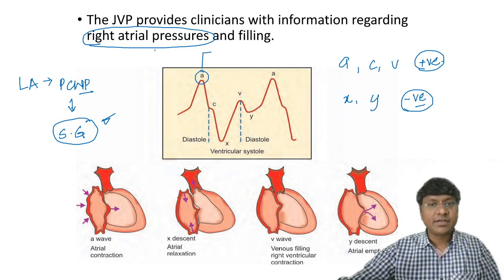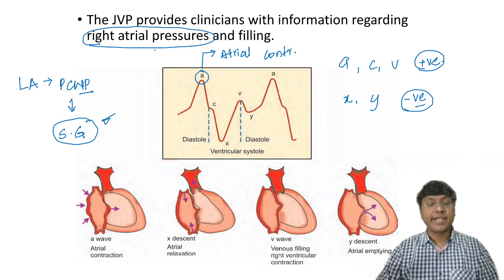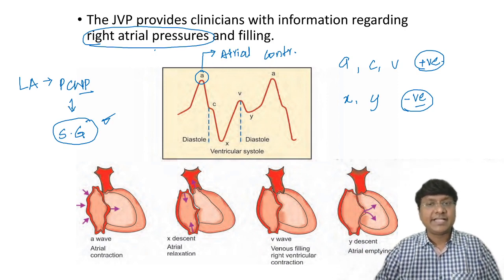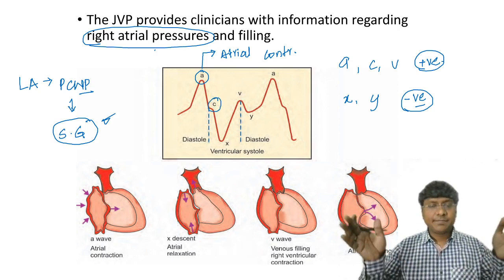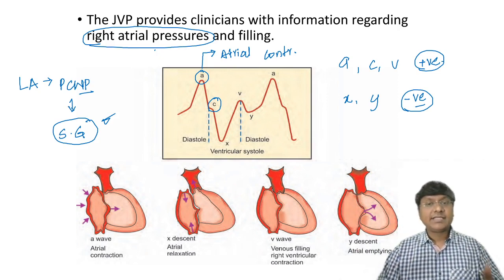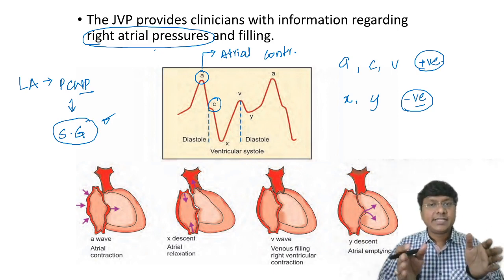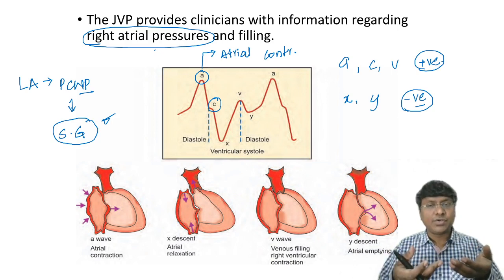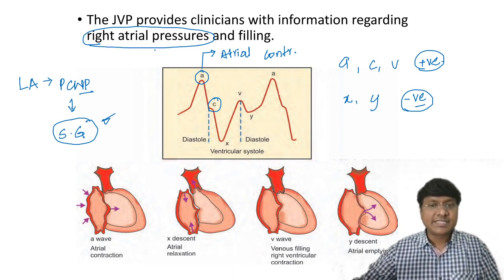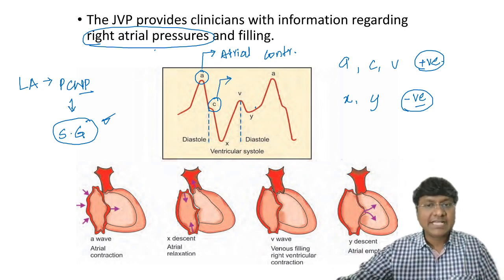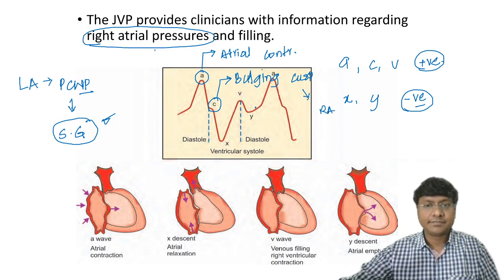The A wave occurs due to atrial contraction — when the atria contract, pressure within the right atria increases, producing the A wave. The C wave follows: when the atria contract, blood enters the ventricle, and then the ventricle starts contracting. The tricuspid valve closes and is slightly pushed or bulged into the right atria, causing pressure to increase again — that produces the C wave. So the C wave is due to bulging of the cusp into the right atrium.